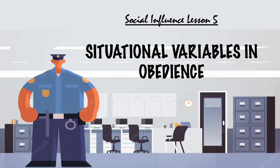Welcome to Social Influence Lesson 5. This is the second lesson in the Obedience series and it's going to be looking at situational variables. If you missed the first lesson, it's linked at the top of your screen now and I would suggest having a quick look at it because the content in this video follows on from the last one. For example, it would be good to have a little bit of knowledge on how Milgram's baseline procedure worked. You can see what we're going to cover in the description below and if you want to jump to a specific bit, you can use the timestamps to do so.